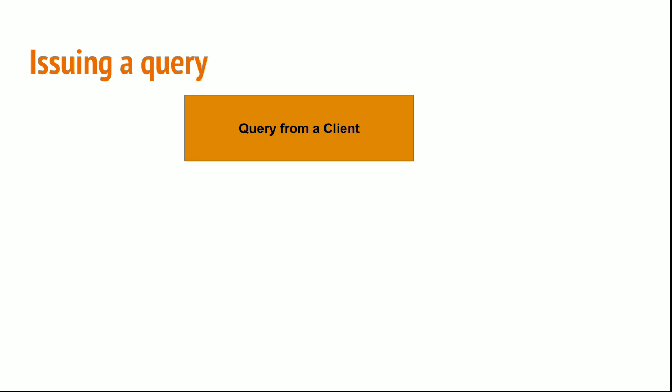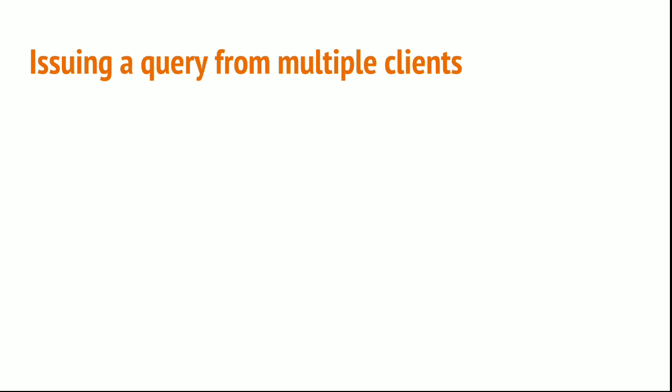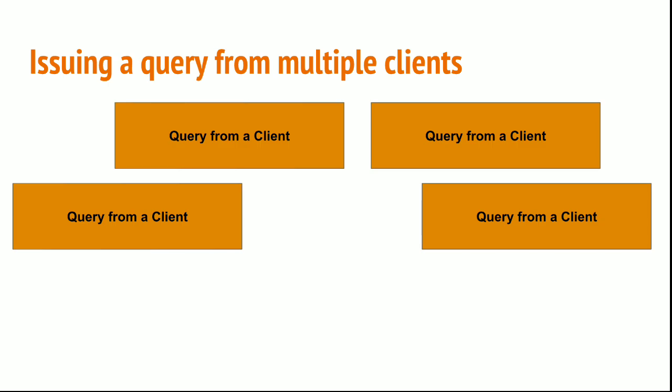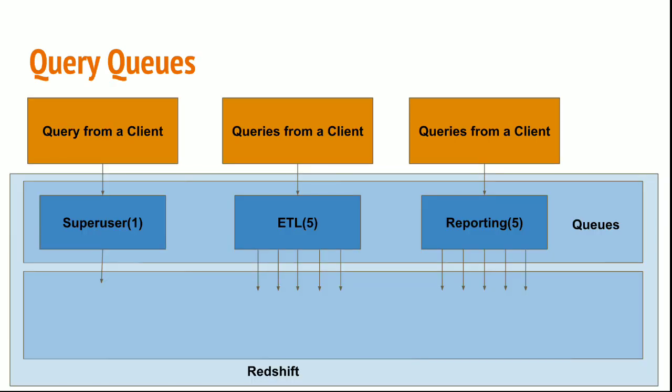You can issue a query from any client, be it from the workbench or any BI tool or data analytics teams. The query will hit the database and fetch the data for you. What if you have multiple clients? One ETL job will be issuing a query to insert the data, one from the BI team will be retrieving the data, and the data science team will be hitting the data, and many other clients will be hitting your data. Now the load on Redshift will be so huge. In such a case we can create query queues.